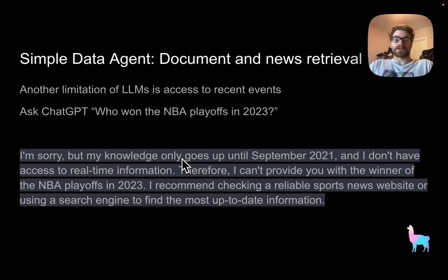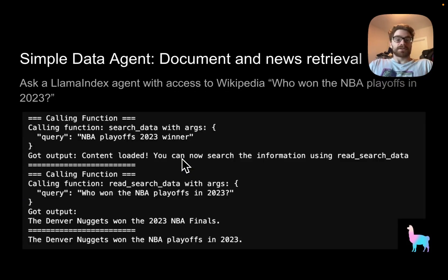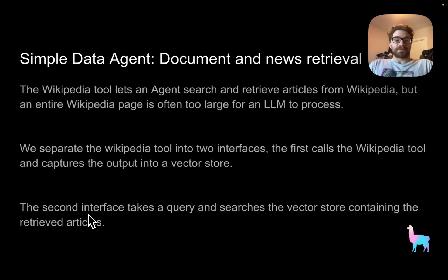If we ask ChatGPT who won the NBA playoffs in 2023, we get the generic knowledge cutoff answer — no access to real-time information. Luckily, with Llama Index we can give our agent access to real-time information. When we ask a Llama Index agent with access to Wikipedia who won the NBA playoffs in 2023, we load some content and get the answer that the Denver Nuggets won the 2023 NBA Finals — which is the right answer. The Wikipedia tool lets the agent search and retrieve articles, but an entire Wikipedia page is often too large for a large language model to process.